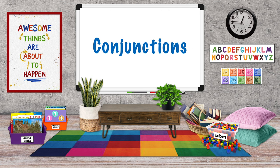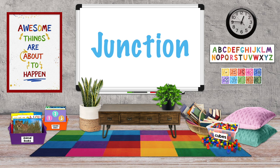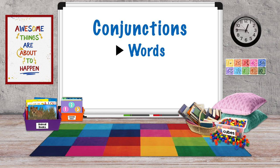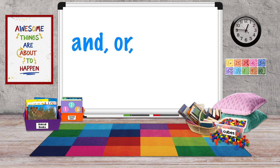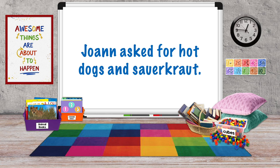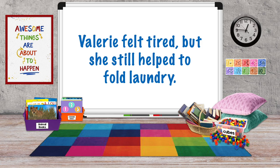That brings us to conjunctions. An old Schoolhouse Rock video asks, 'Conjunction junction, what's your function?' A junction is a place that joins two things, like train tracks together. Conjunctions are words that connect — they can connect words, phrases, and clauses. Some basic conjunctions are and, for, but, nor, yet, and so. Here's an example: Joanne asked for hot dogs and sauerkraut — our conjunction is 'and,' joining the two nouns. One more: Valerie felt tired, but she still helped to fold laundry. Our conjunction is 'but,' joining two independent thoughts: Valerie felt tired, and she helped fold laundry.